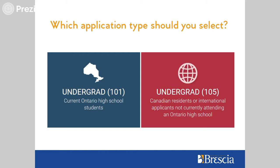All other students should select the 105 application. This includes students attending a high school outside of the province of Ontario, a high school outside of Canada, or transfer students from another college or university.